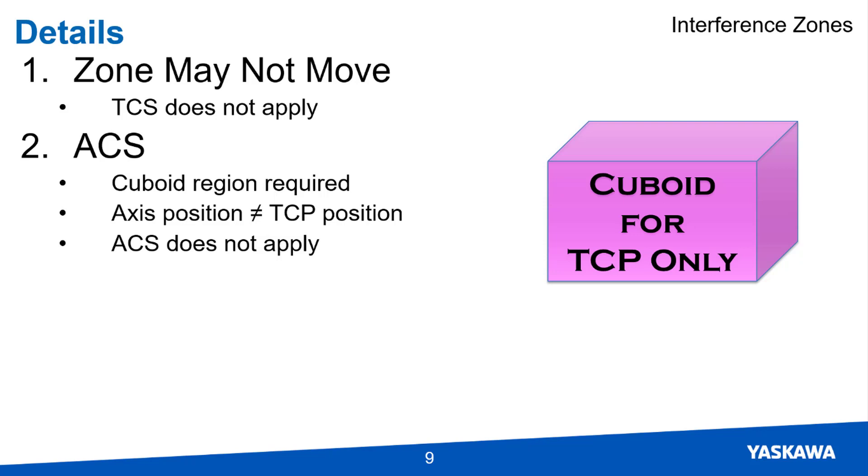The axis coordinate system may also not be used, since this does not result in a cuboid region for every mechanism type. The axis coordinate system would not ensure that the TCP may not enter the region in an alternate mechanical position or with a different tool.